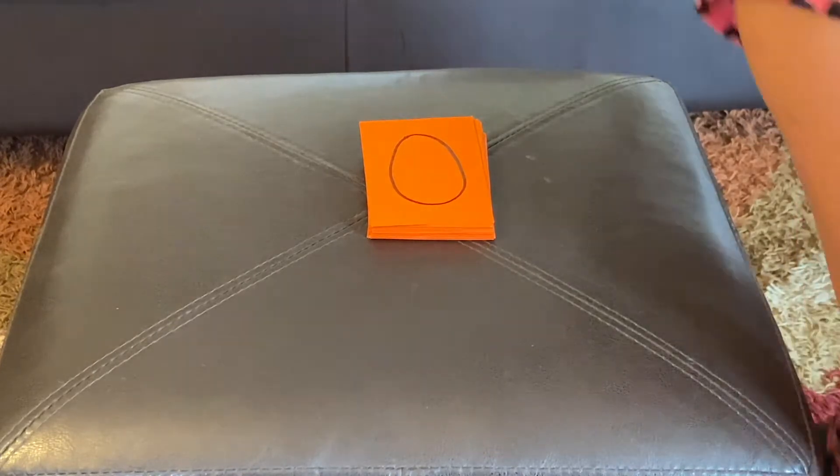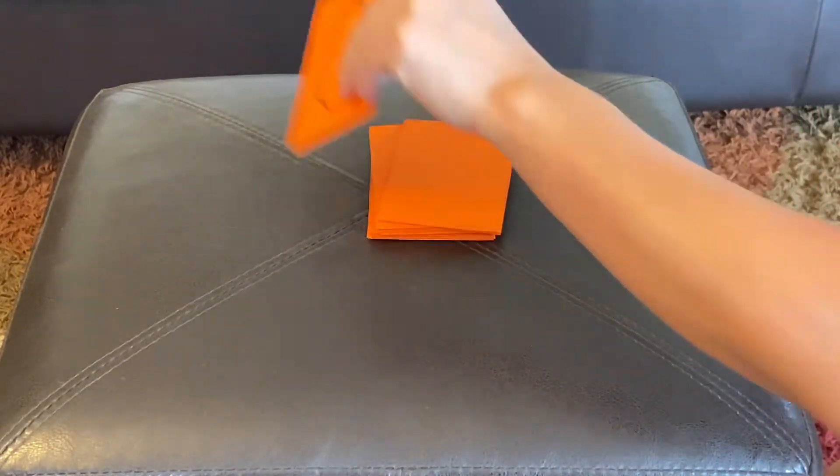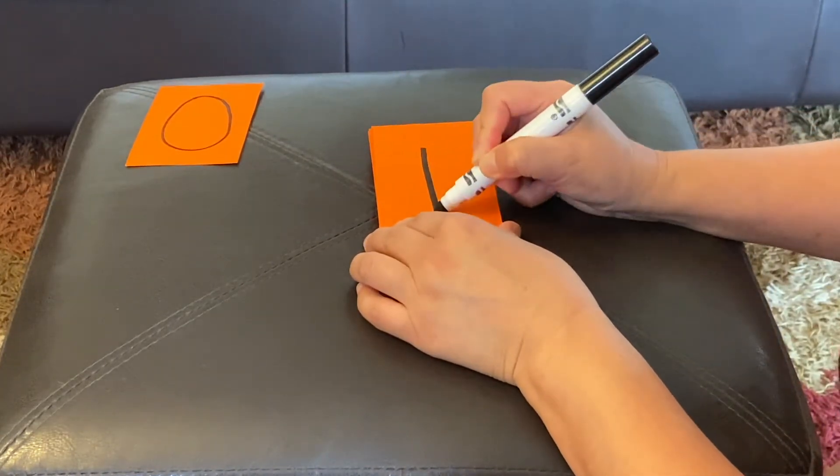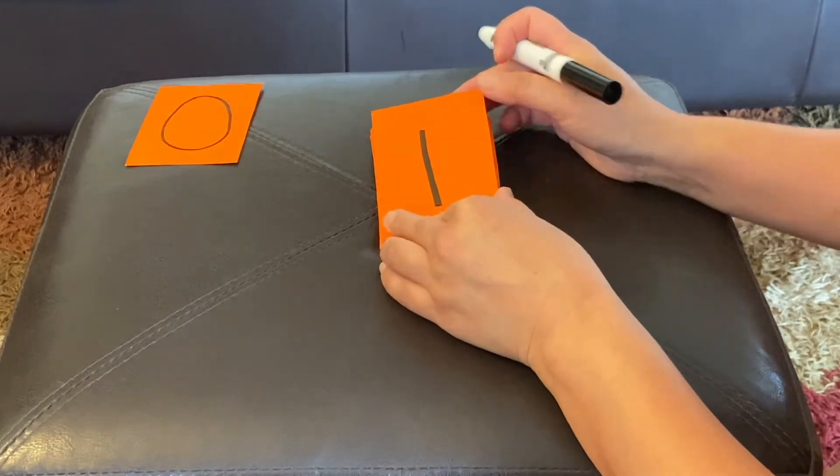All right, got it? So, we'll put the zero over here. What comes after zero? One. Nice straight line down. There we go.